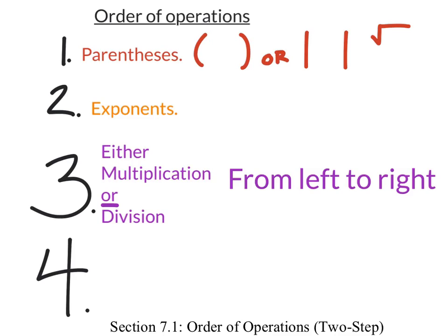That would be the third step, which includes both multiplication and division. Multiplication and division are basic operations. Naturally, what comes next after multiplication or division would be either addition or subtraction. But again, it is conditional — it's either addition or subtraction, and you have to scan the problem from left to right.